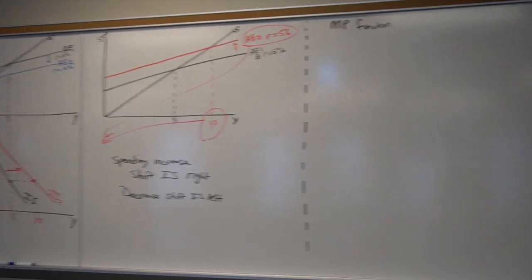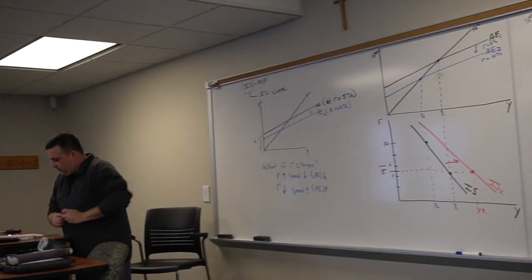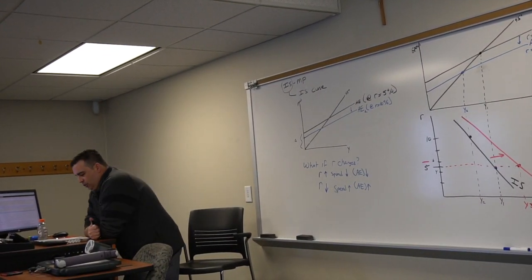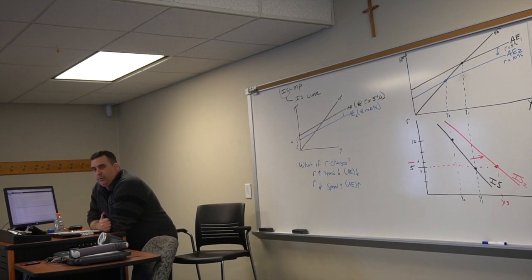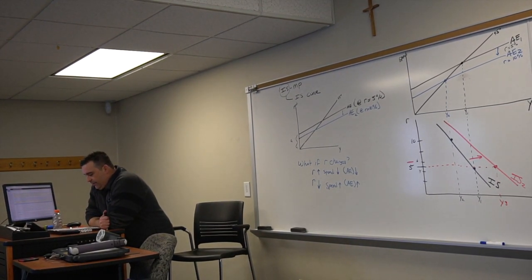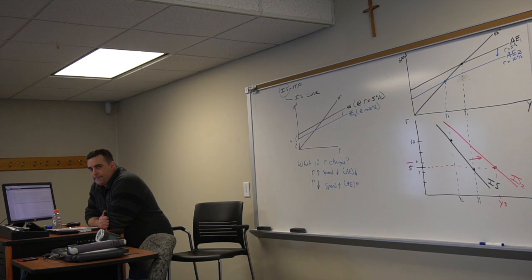The MP function—I don't know why I call one curve and one function, but I do, they're the same thing. So the MP function, let me give you a definition: the MP function represents all combinations of interest rates and real GDP amounts.